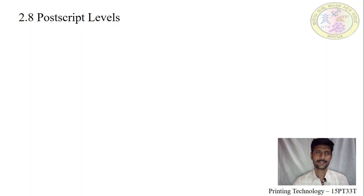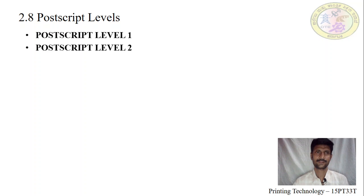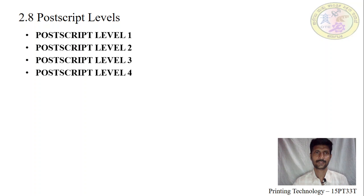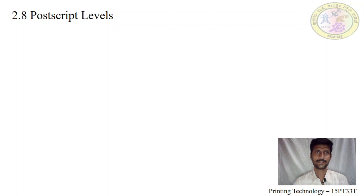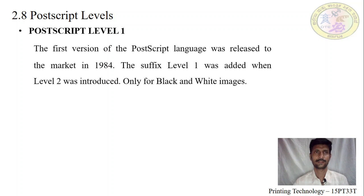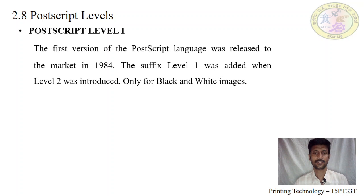Next we will see the PostScript levels — what they are and what their functions are. There are four types: PostScript Level 1, PostScript Level 2, PostScript Level 3, and PostScript Level 4. PostScript Level 1 is the first version of the PostScript language. It was released in 1984. It supports only black and white images; it does not support text or color images.